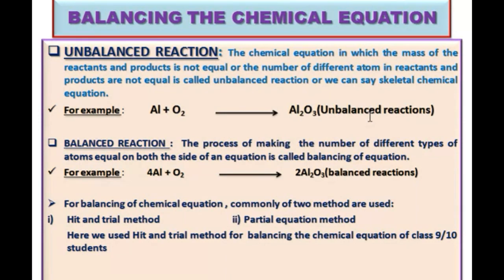Students, this is a chemical reaction and we need to balance it. First we define the unbalanced reaction, then we balance it. The unbalanced reaction is a chemical reaction in which the mass of the reactants and products is not equal, or the number of different atoms in the reactants and products are not equal. This is called the unbalanced reaction, or we can say the skeletal chemical equation. For example, aluminum reacts with oxygen to form aluminum oxide — this is a totally unbalanced reaction.